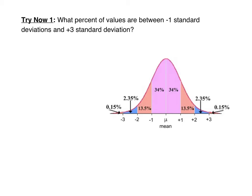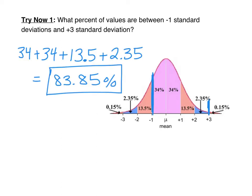Here's a try-it for you, just like example one. What percent of the values are between negative one standard deviation and positive three standard deviations? Go ahead and pause the video and find the total percent. The answer should be 83.85% — you highlight negative one to positive three on the graph and add together those four section percentages to get 83.85%.